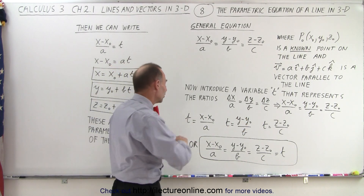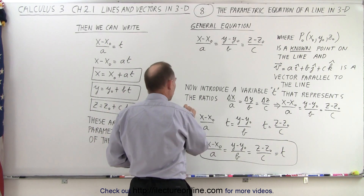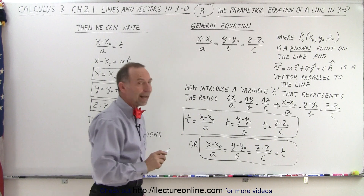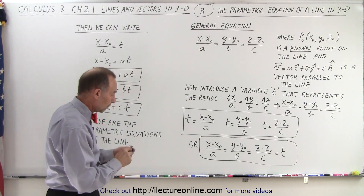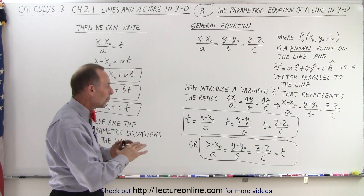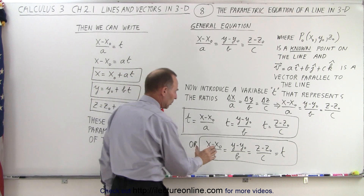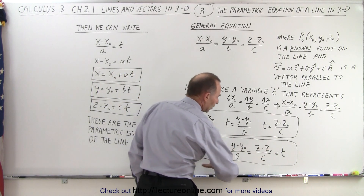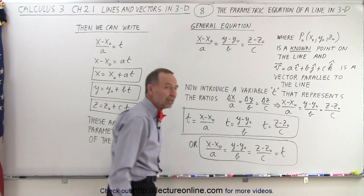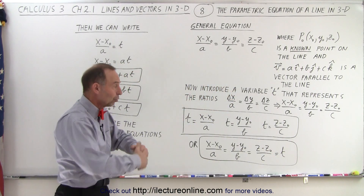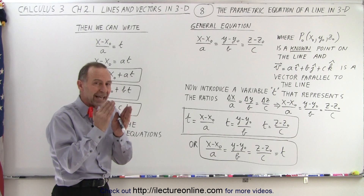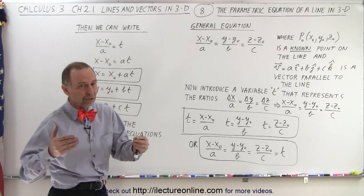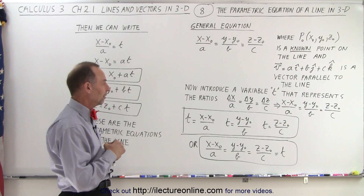So this could be considered the parametric equations of a line in three-dimensional space. We rewrite it as the three ratios that equal each other, and all of that must therefore also equal t. So t is simply the ratio between the change in the x, y, and z coordinates of the two points on the line divided by the length of the x, y, and z components of the parallel vector.